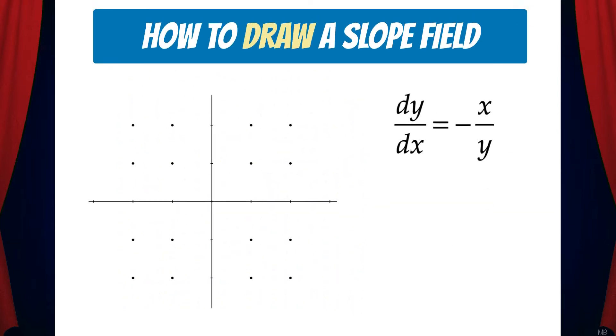Let's talk about how to draw a slope field when given a differential equation. Here, we have the differential equation dy/dx equals negative x over y. Let's create a slope field for this differential equation by drawing little tangent lines at each of the coordinates provided in the grid.